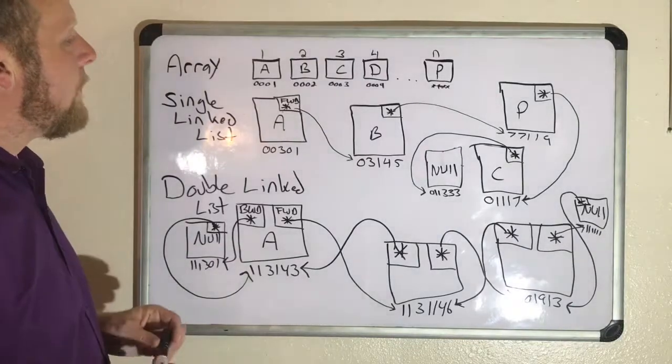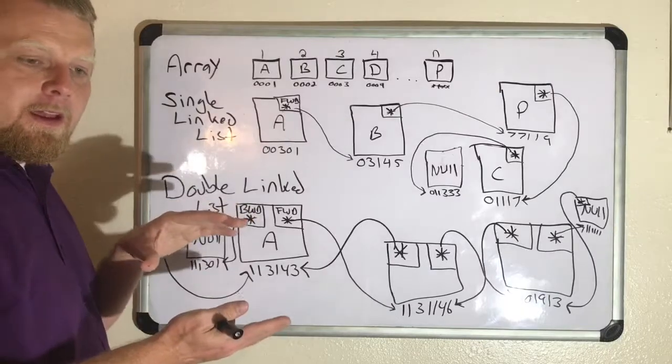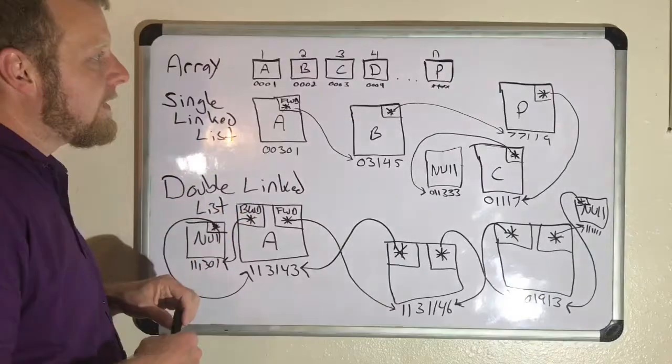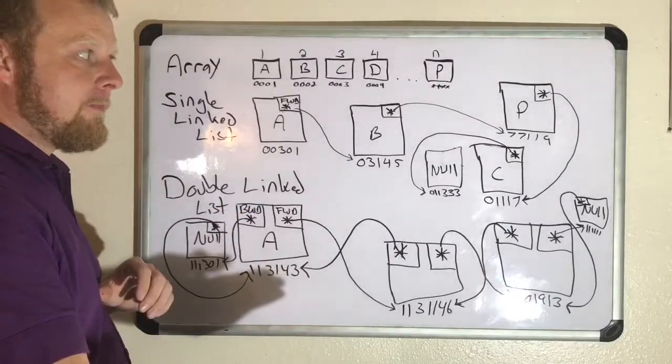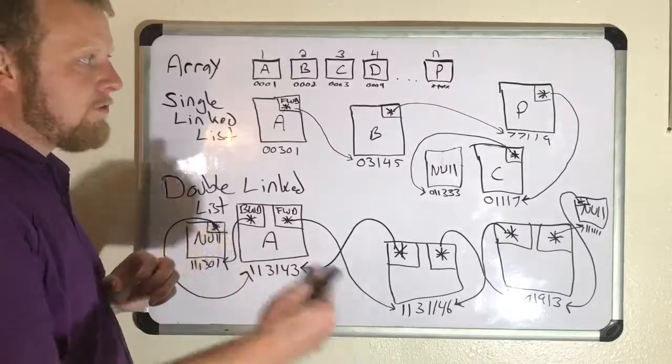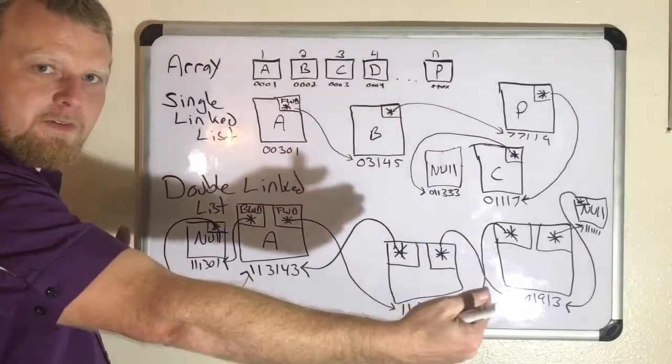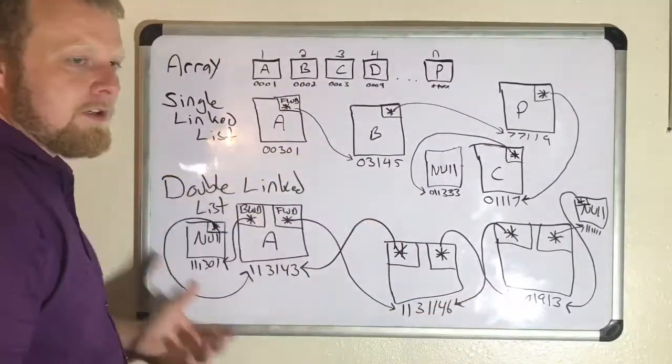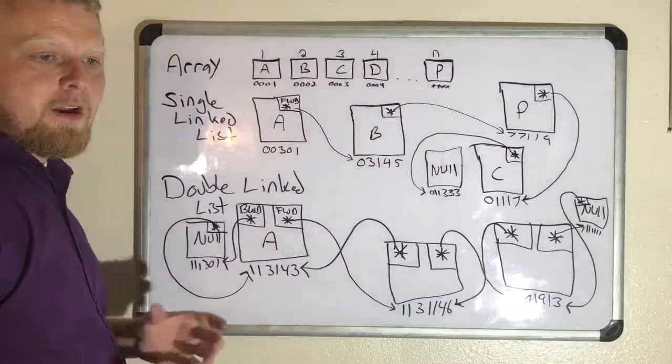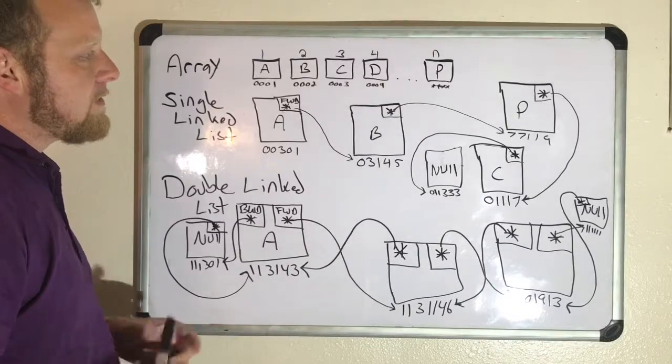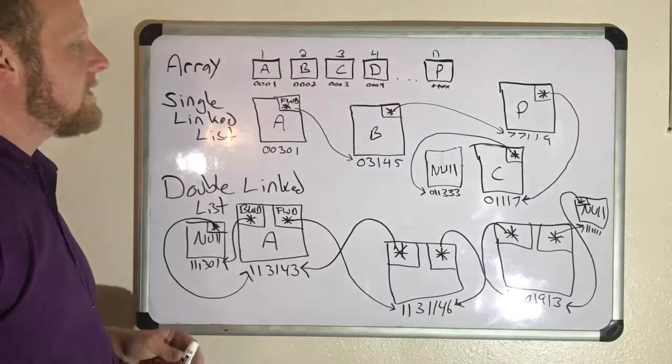Now, with an array, once you ask for the allocation of that memory before runtime, that's it. That's what you're getting. You can't grow, you can't shrink. So if you end up asking for a million continuous pieces of memory and you don't use it all, well, that's still used up. It's not going to be used for anything else.